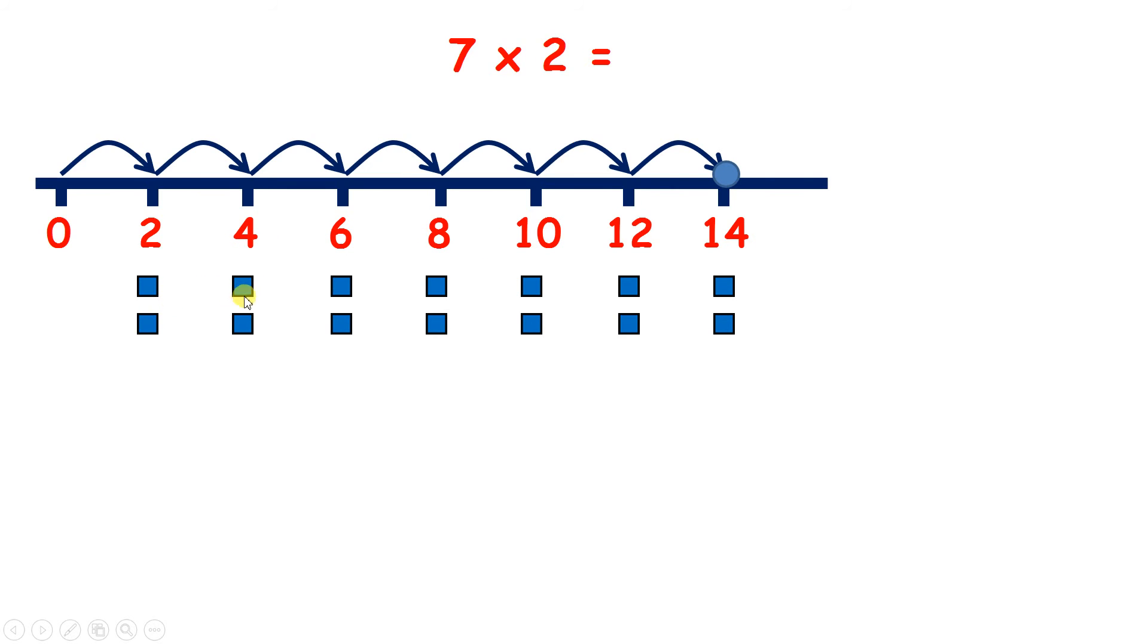So I have 1, 2, 3, 4, 5, 6, 7 groups of 2. Or I have made 7 jumps on my number line. So 7 times 2 is 14.